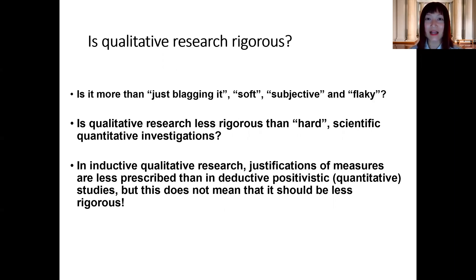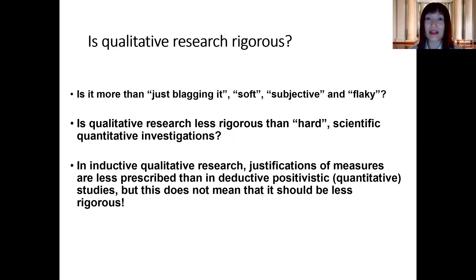Let's say you have designed a questionnaire for your research. We need to make sure that people who participate in your questionnaire should be a representative sample. We try to cover as balanced as possible from different sample groups who can represent the population that you want to study. That is a very typical rigour concept in quantitative research. In qualitative research, we usually have a very small sample size, as we discussed in the first part of the video.